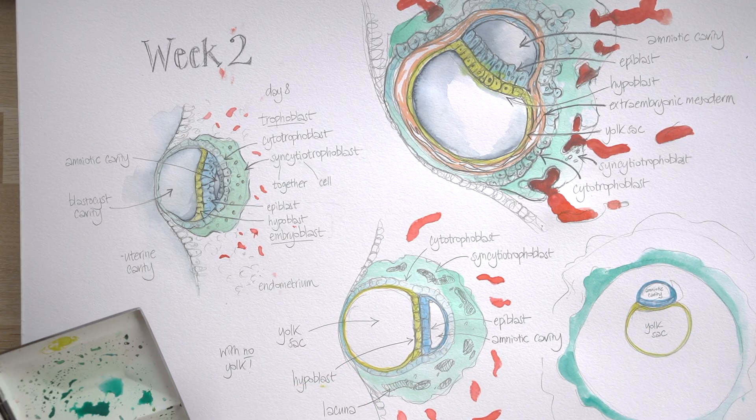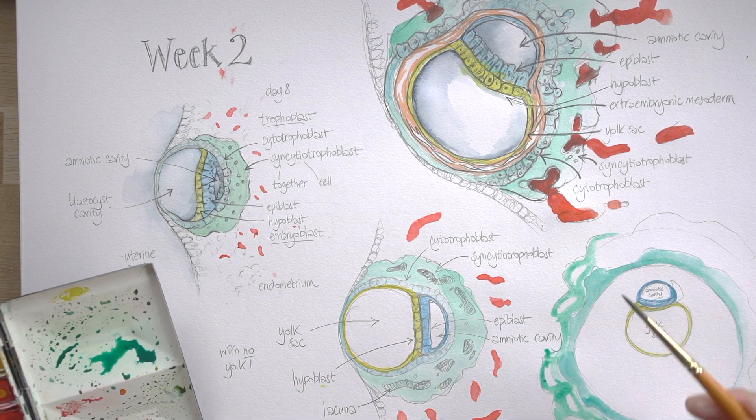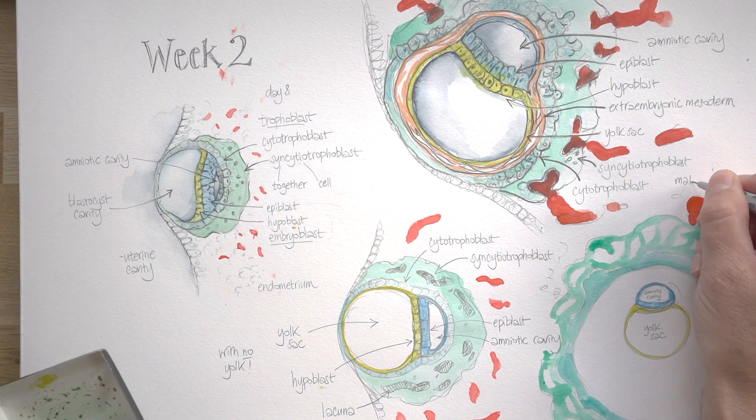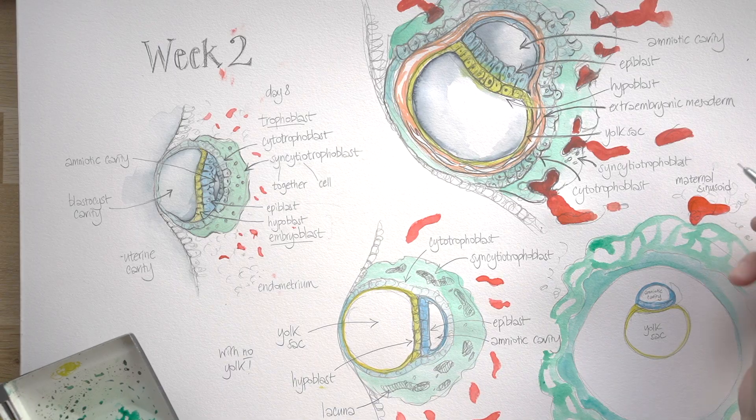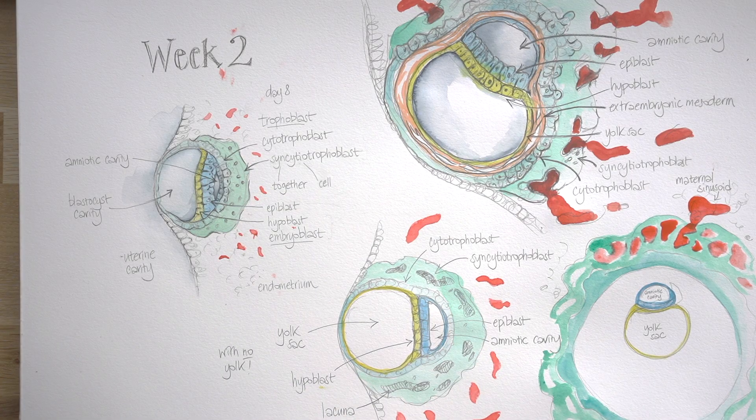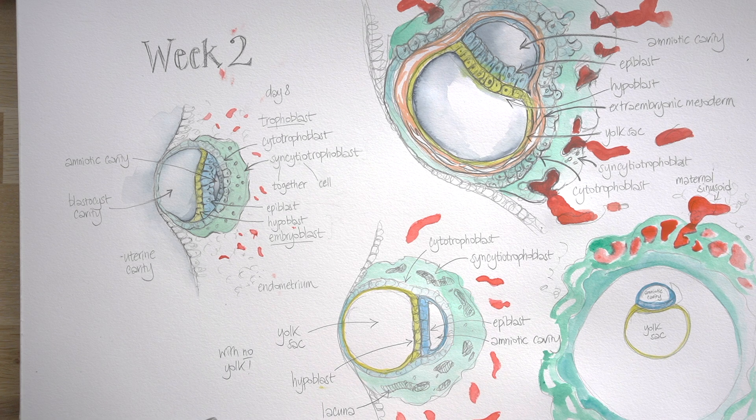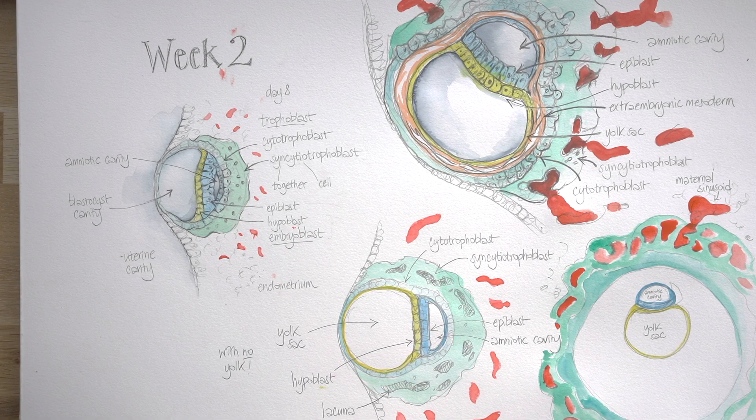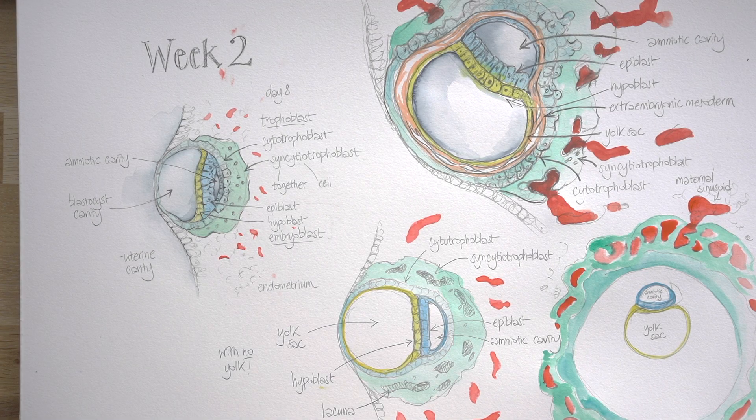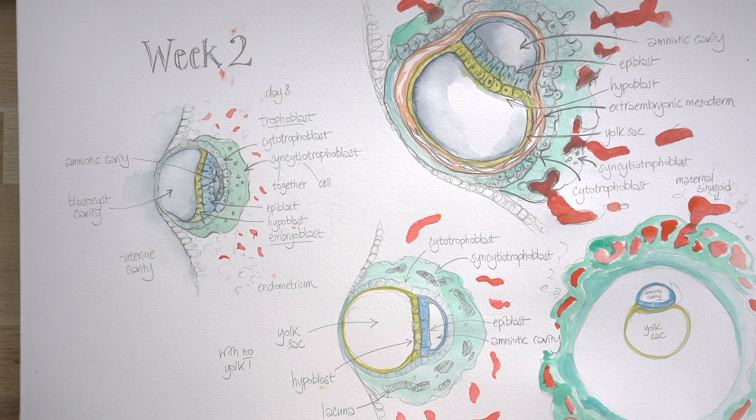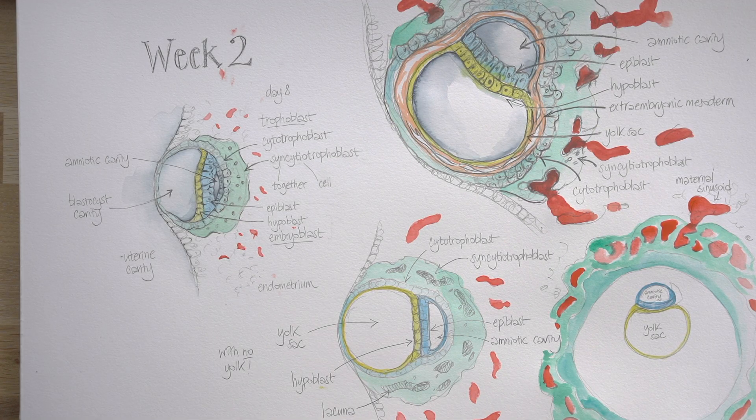Time to add in the cytotrophoblast and the syncytiotrophoblast, which is now full of holes, lacunae, and the maternal blood is pouring in now from those sinusoids. And that means all the cells of the embryo are benefiting from the nutrition and oxygen being brought to it by that blood. But it does look as though the embryoblast is sort of floating quite separate from those layers of the trophoblast, which are forming the early placenta.